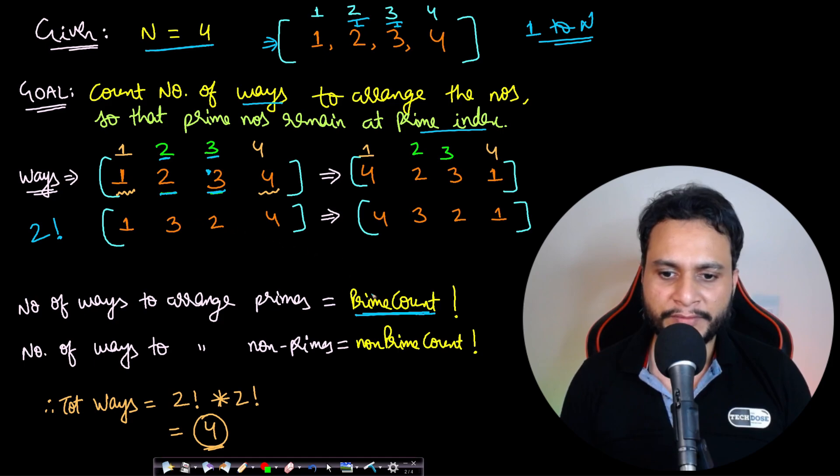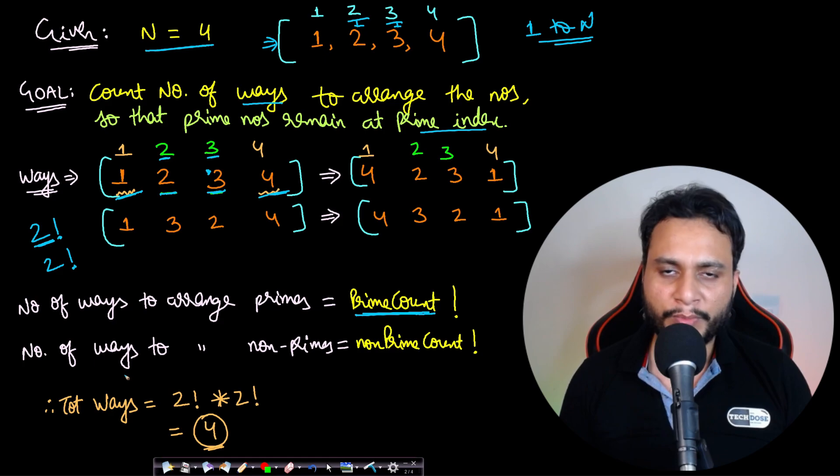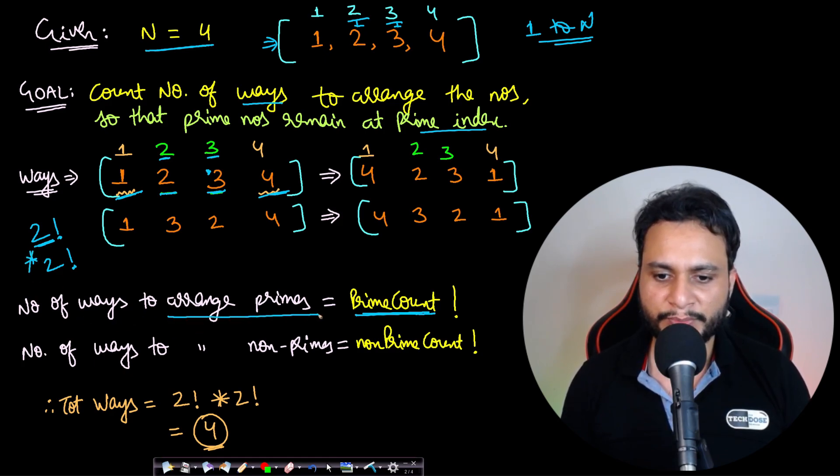If you have these many prime numbers, you can subtract from the size of the array the number of primes to find the number of non-primes, which in this case equals 2. The arrangements will be 2 factorial. To find all possible ways, you multiply the number of ways to arrange primes, which is prime_count factorial, and multiply it with the number of ways to arrange non-primes, which is non-prime_count factorial.